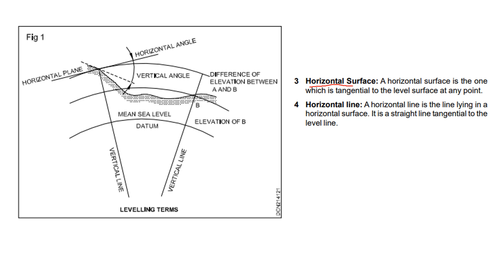Under definition, a horizontal surface is one which is tangential to the level surface at any point. At any point, if you move it, it is a horizontal surface. A horizontal line is a straight line tangential to the level line. We call this the horizontal surface and horizontal line.